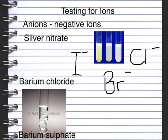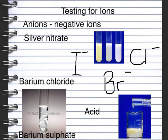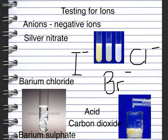The last anion test is for the carbonate ion. We can do this by adding an acid - the carbonate reacts with the acid to produce a gas, which is carbon dioxide. To review: silver nitrate produces precipitates of silver chloride, silver bromide, and silver iodide. Barium chloride produces a precipitate of barium sulphate, all insoluble. Adding acid to a carbonate gives a fizzing reaction producing carbon dioxide gas.